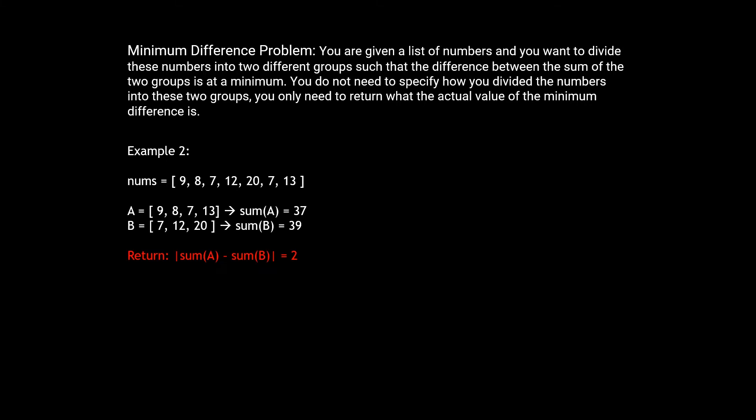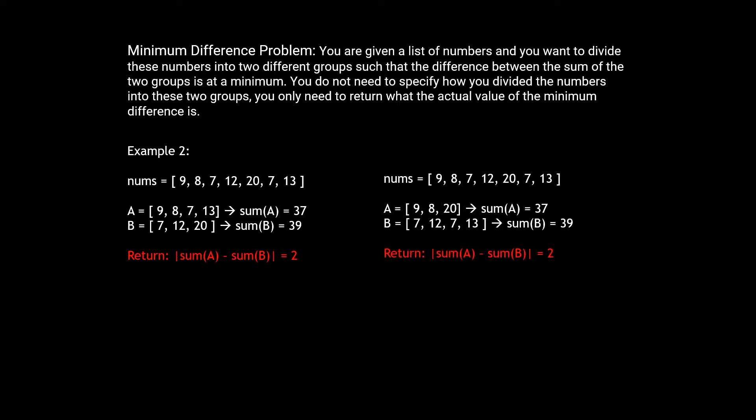For example 2, we're given these numbers and the best way to divide them allows for a minimum difference of 2. Another thing to note is that the groups don't have to be unique — for example, there could be a second arrangement which also has a minimum difference of 2. The arrangements themselves don't really matter as long as we arrive at the correct minimum difference.